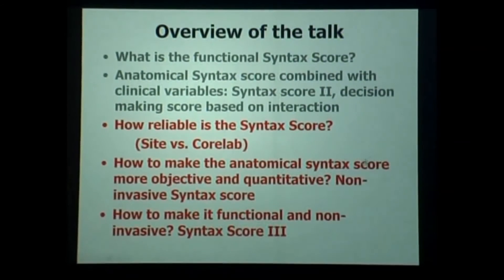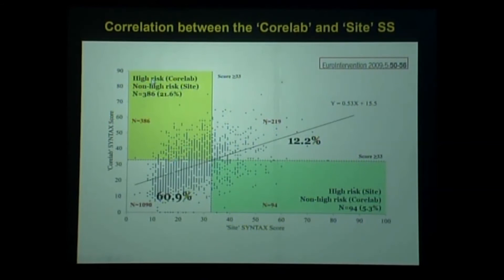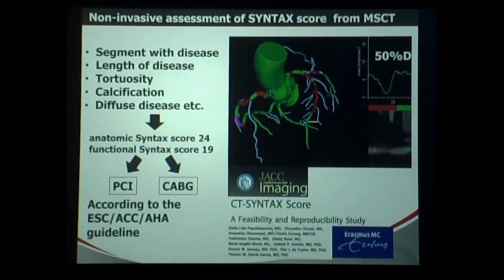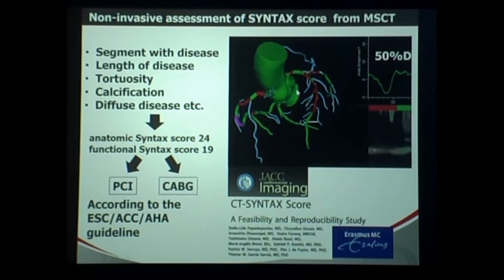Are we reliable in the Syntax score? Published in JACC — here we have good concordance in 61% below 33, and above 33 we had concordance in 12.2%. But there is discordance between cath lab reads and sites. So we need a new instrument — and we created the Syntax score CT, working now with HeartFlow. On multi-slice CT scan, they are measuring all the diameter stenoses, so you can very reliably determine the number of segments.